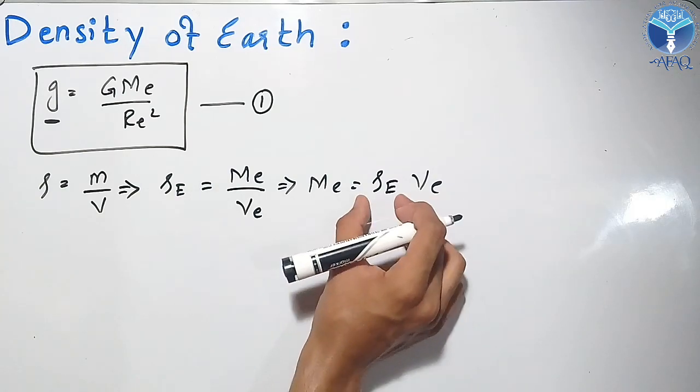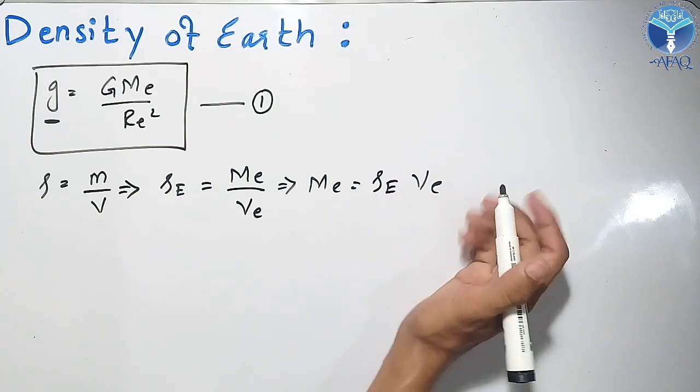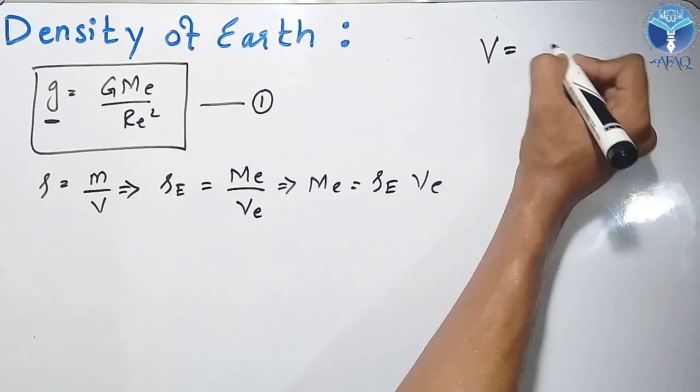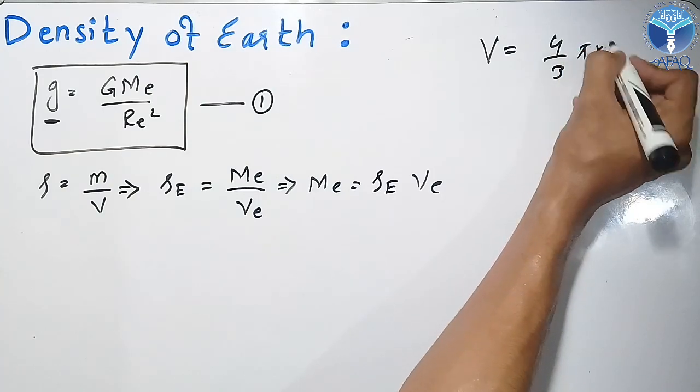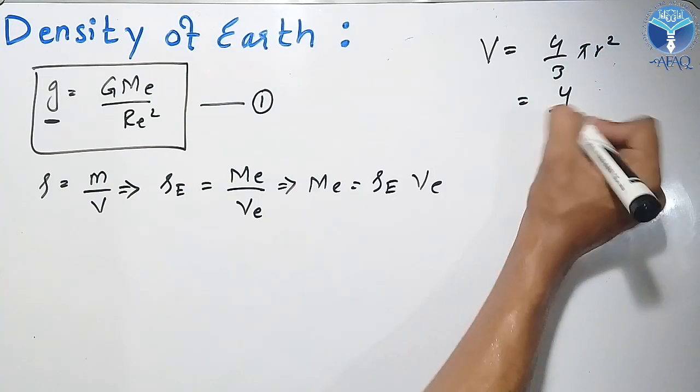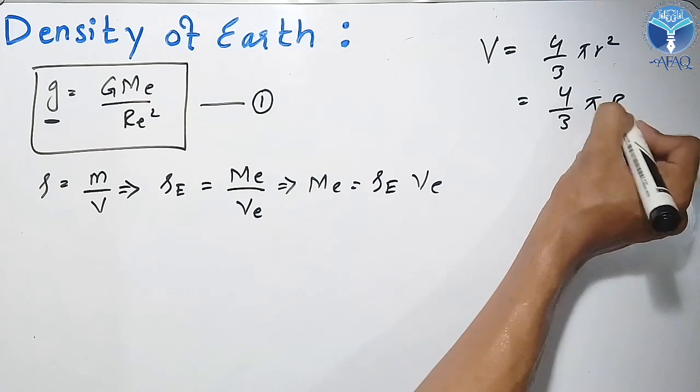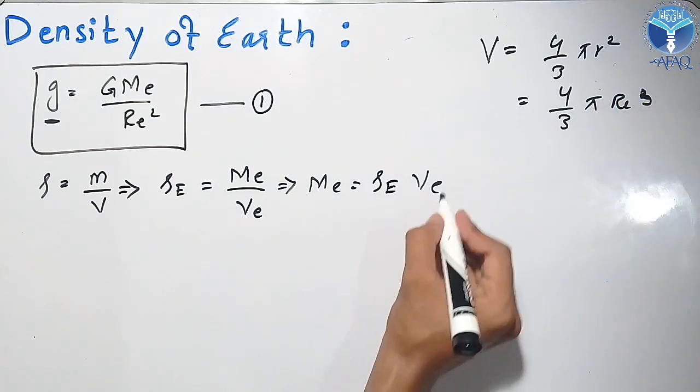As you know, the volume of a sphere is equal to 4/3 πr³. So in case of Earth, that will be 4/3 πRₑ³, where Rₑ is the radius of the Earth. So that is my equation number 2.